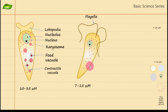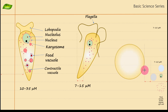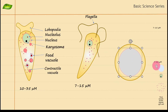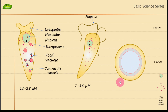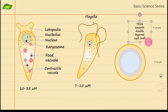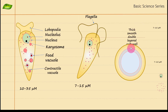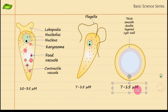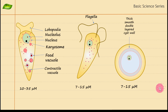The third form is the dormant, or cyst, form, which is spherical in nature. It has a thick, smooth, double-layered cyst wall — that is why the illustration uses multiple concentric circles to show the thick wall. The size of the cyst is again 7 to 15 micrometers, same as the flagellate form, but the shape is spherical rather than pear-shaped.